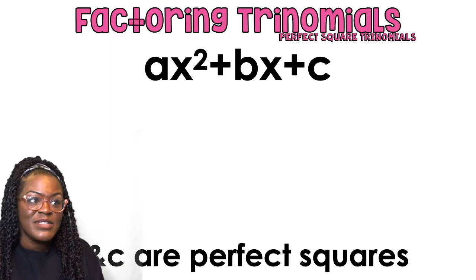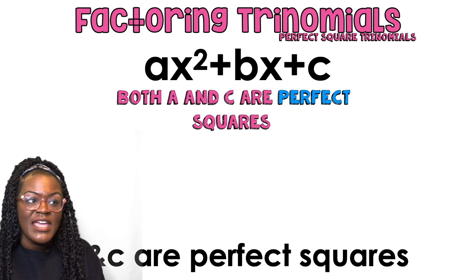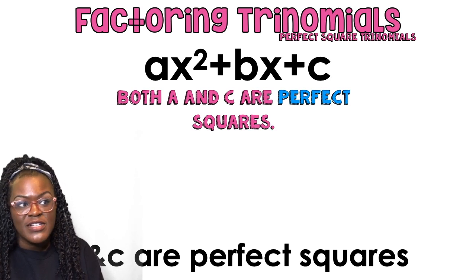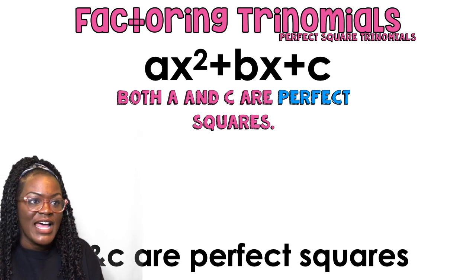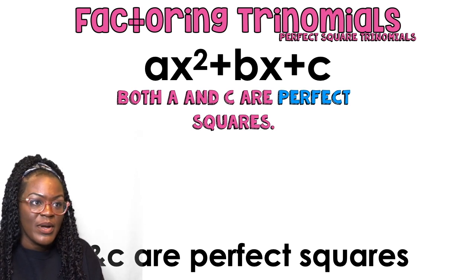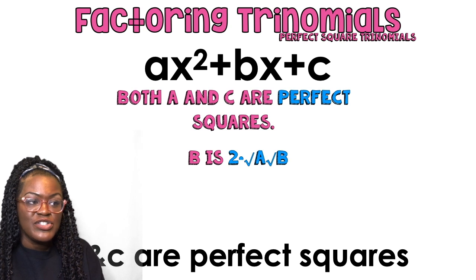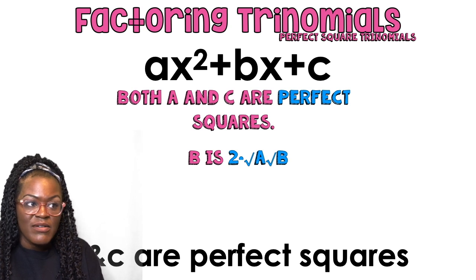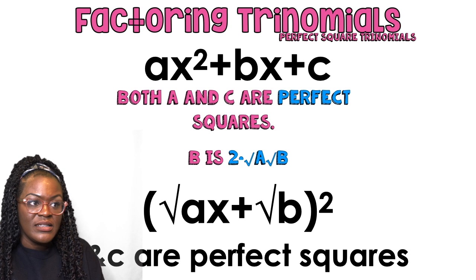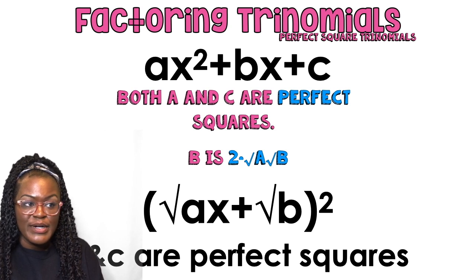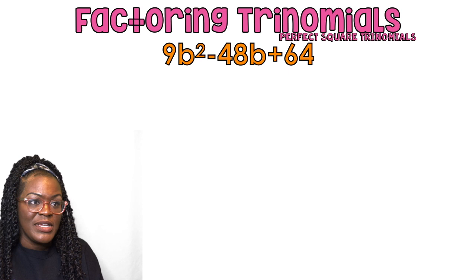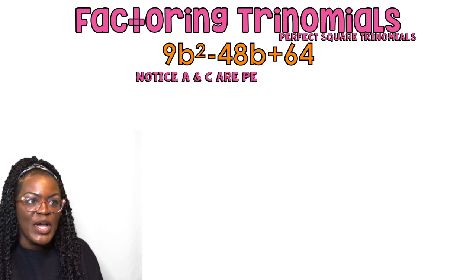If I have ax² + bx + c, and both a and c are perfect squares — so the first number is a perfect square and the last number is a perfect square — and b is two times the square root of a times the square root of c, then your answer is just going to be the square root of a times x plus the square root of c, quantity squared.